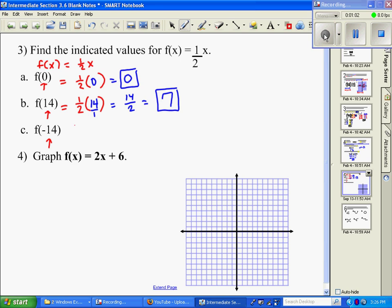And then our part c, it says f of x equals 1 half x. Put in place of x, this time I'm going to substitute a negative 14 in. And if we put it over 1 and multiply straight across, we're going to get negative 14 over 2, which simplifies to negative 7.